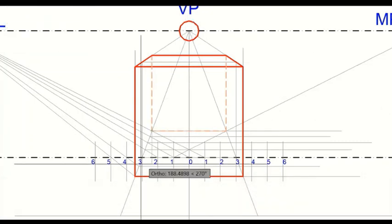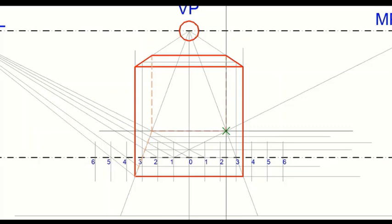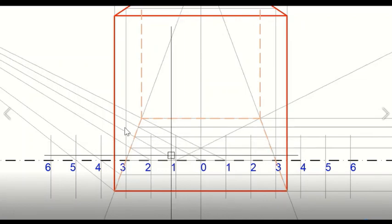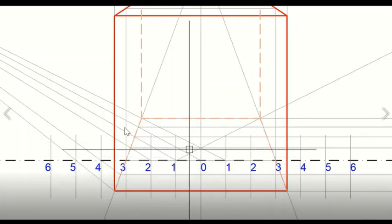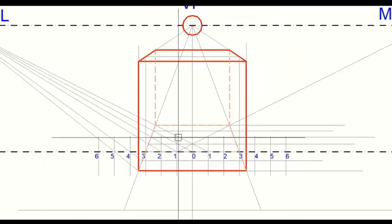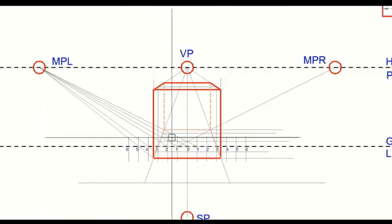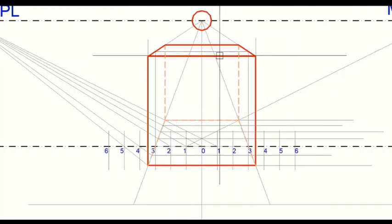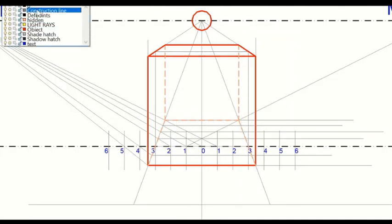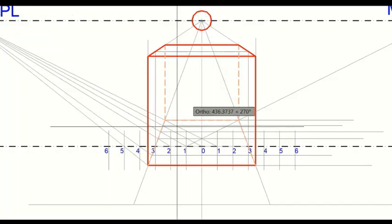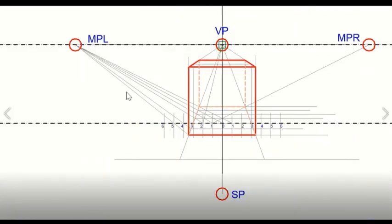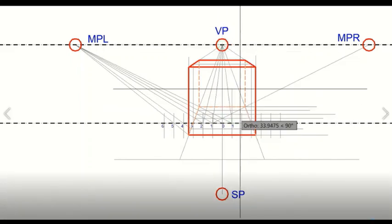Now it is highlighted using the hidden lines and the object. This is how it has been created. I hope you have understood the measuring point method. By this method, we have positioned the cuboid at various places — above the picture plane, above the ground, with the picture plane passing through the object — and shown how it is made. I hope you have enjoyed and learned these methods. Thank you.